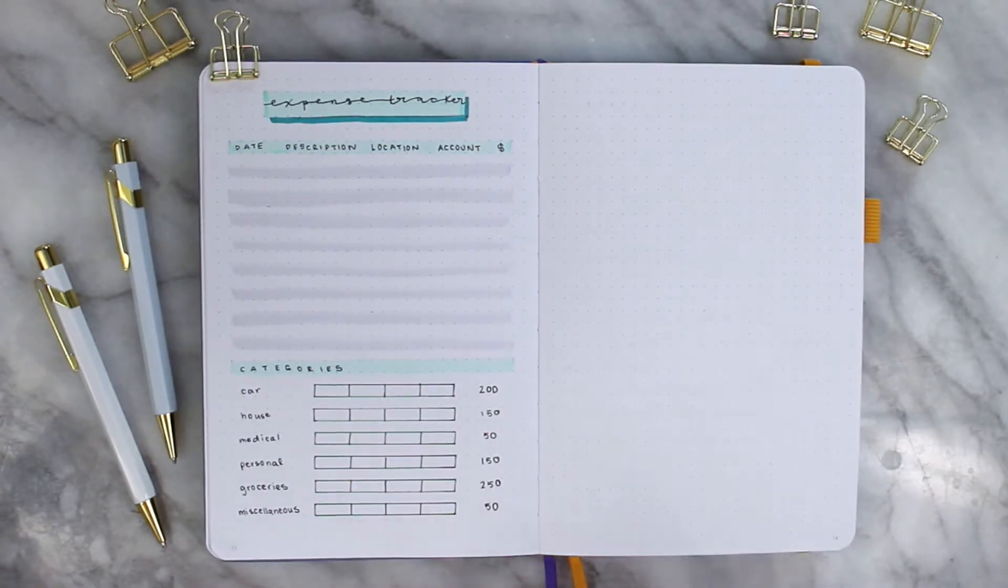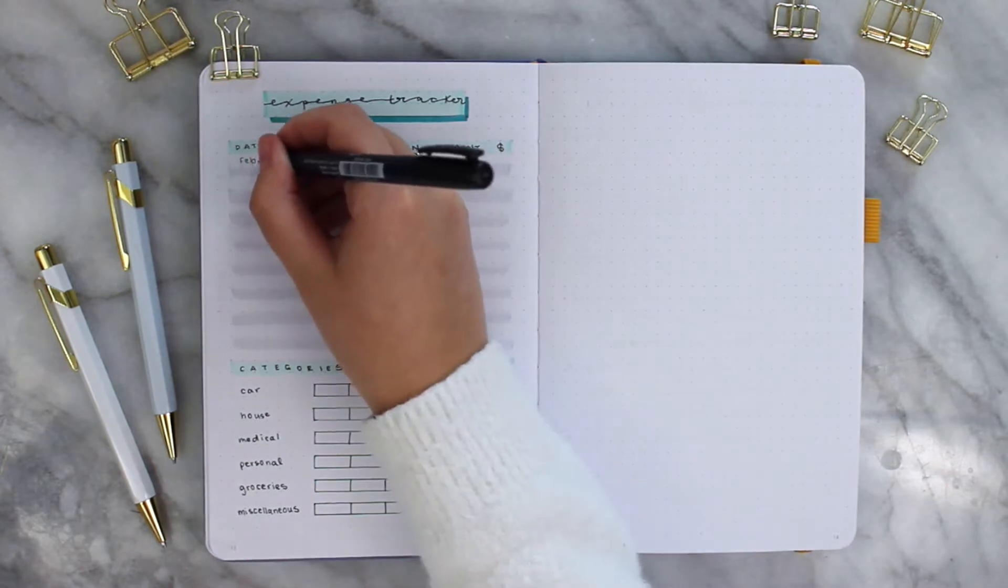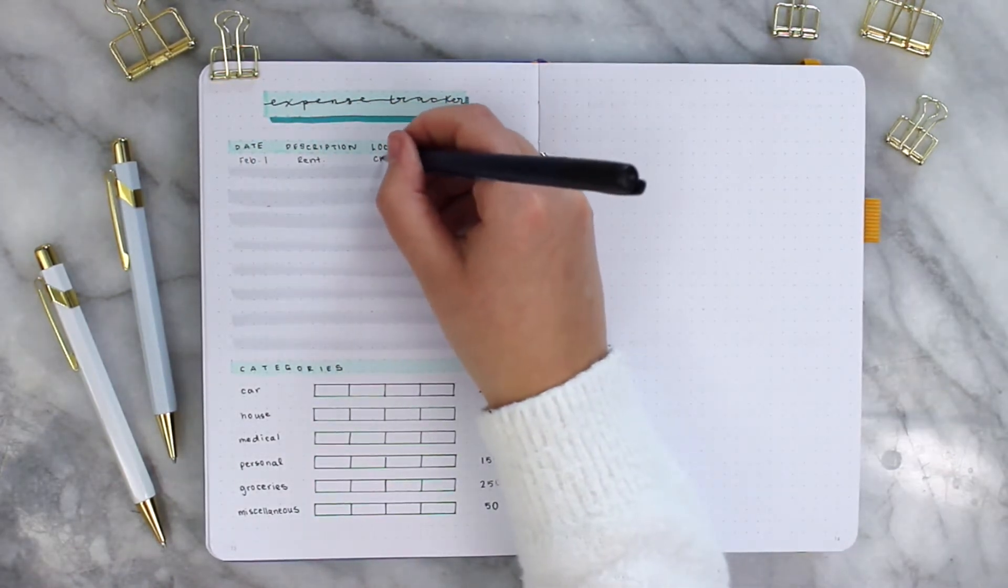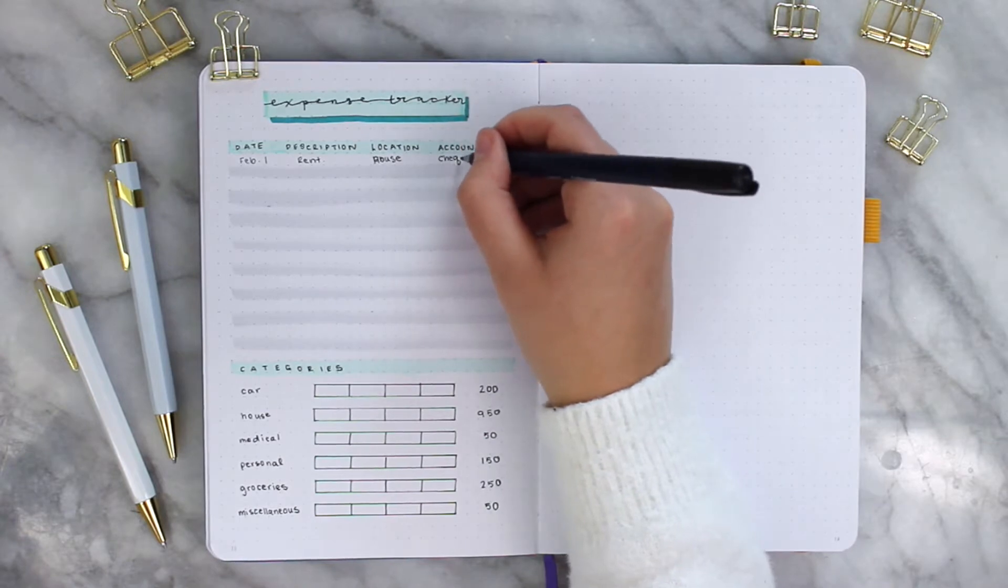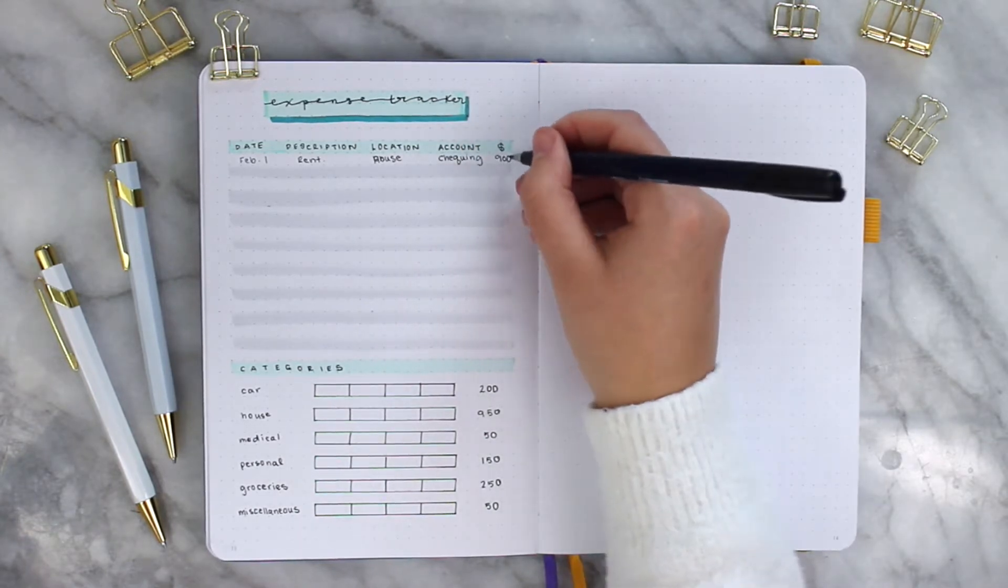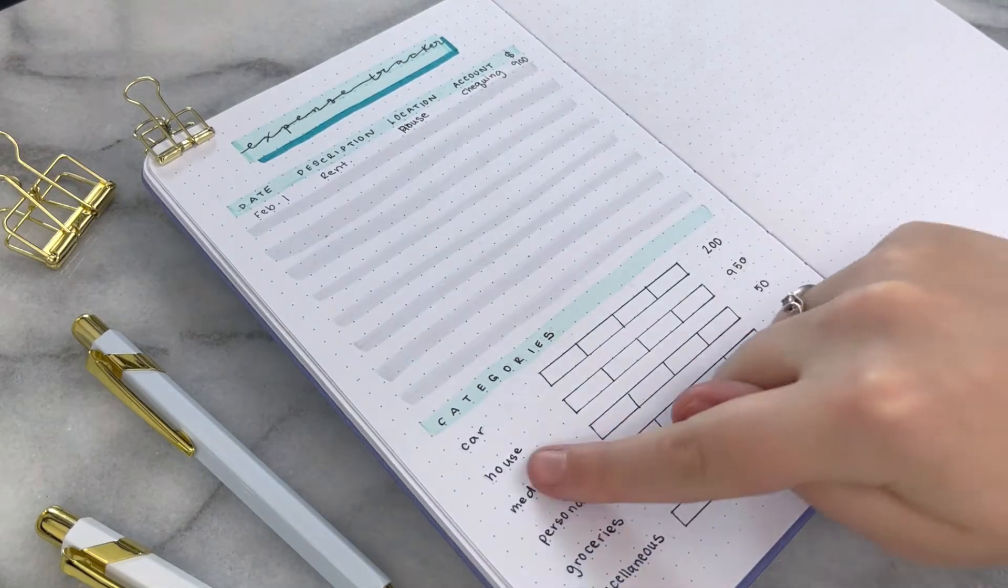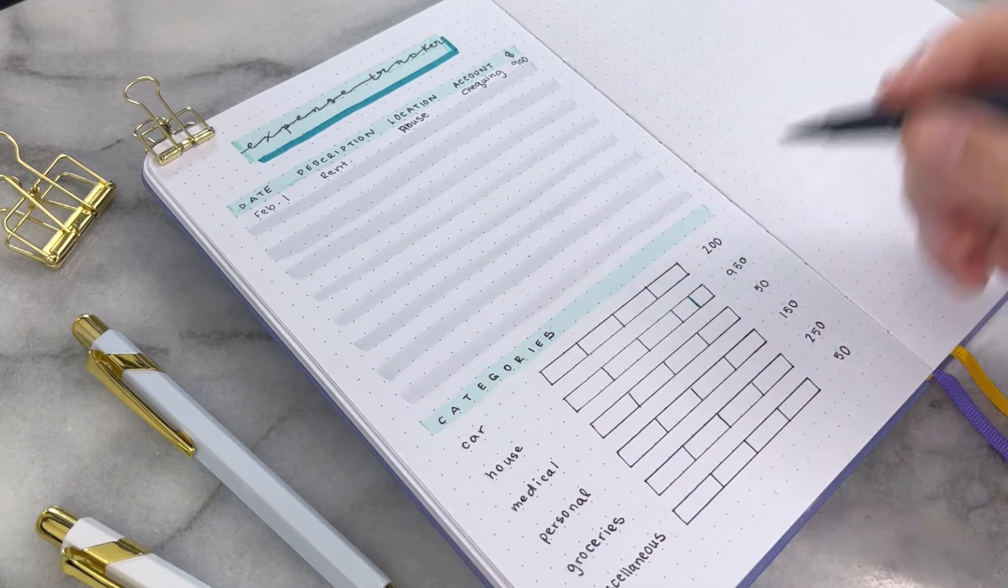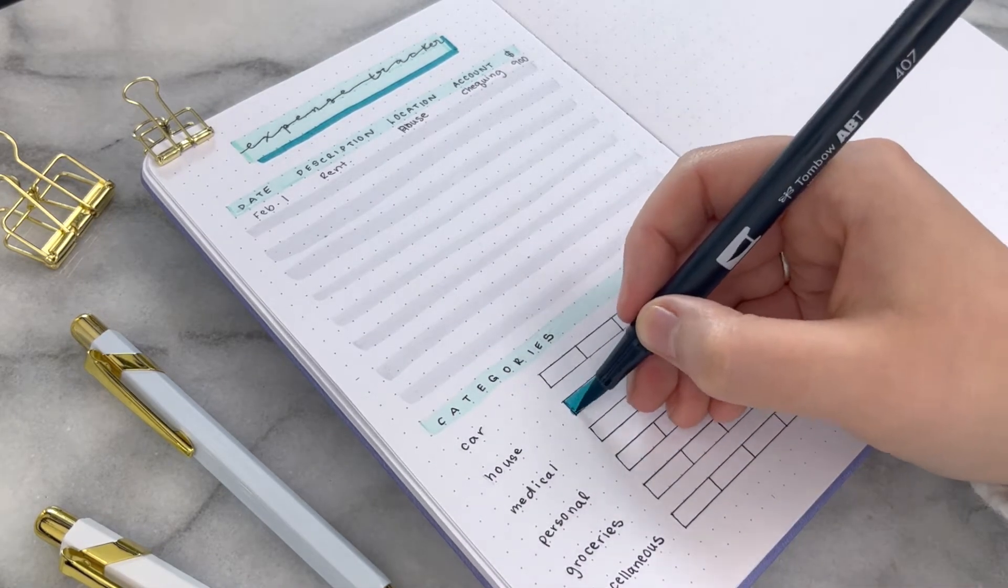Here's just an example of February 1st. I have rent. The location or the category it's going in is in the house. It's coming out of my checking account and $900 is being spent. So I'm filling in $900 here out of the $950 that I had budgeted in this category for the month.